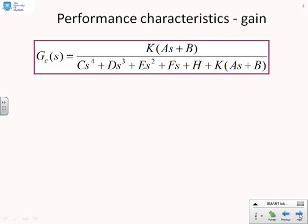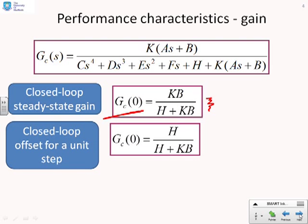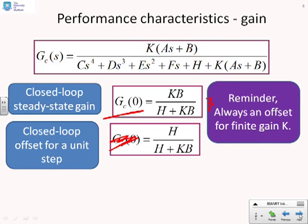There are some things we can do. Let's look at the closed loop gain. To find the closed loop gain, you'll remember we just need to substitute S equal to zero, and we actually get a very simple answer: KB over (H + KB). We could equally compute the closed loop offset for a unit step, and that would give H over (H + KB). The key observation here is there's always an offset for a finite gain K.